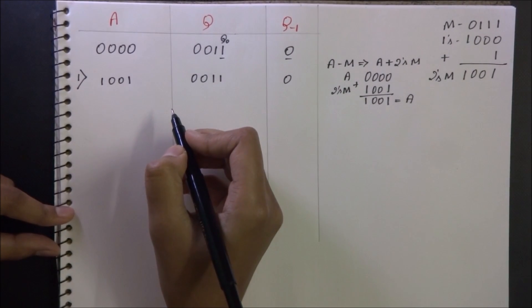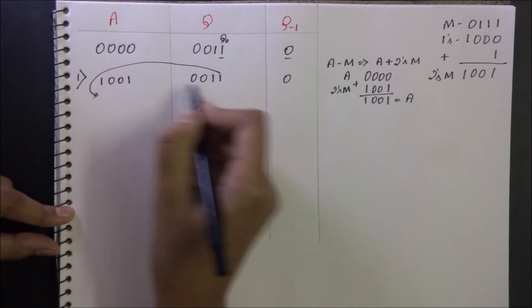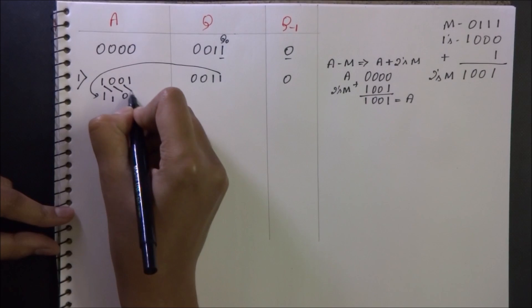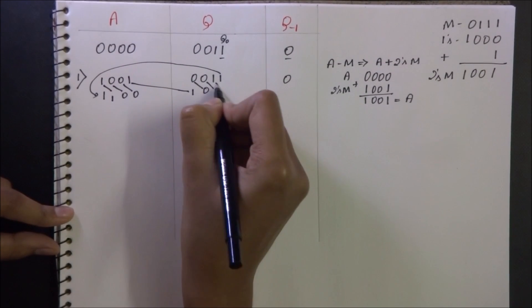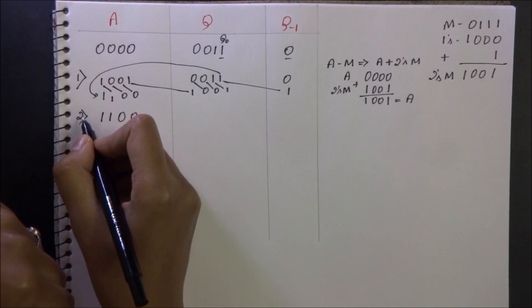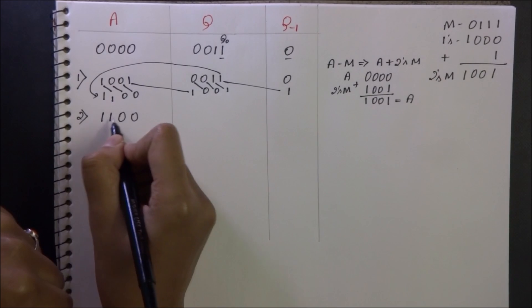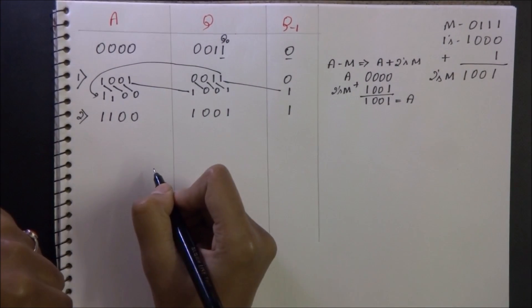So now I need to perform right shift operation. This goes here. 1-1-0-0-1-0-1-1. So for the second step, the status is 1-1-0-0-1-1-0-1-1.